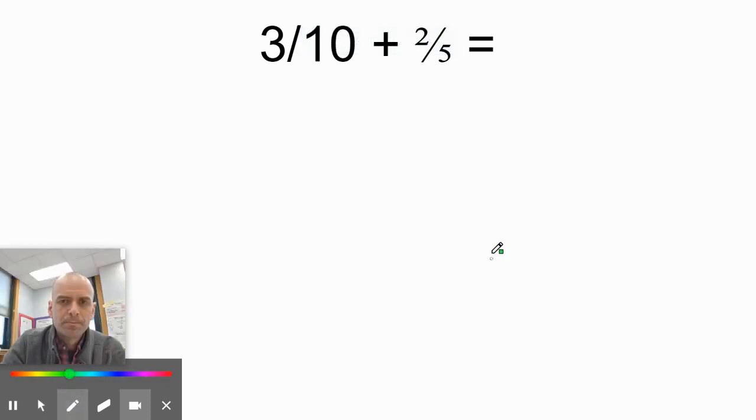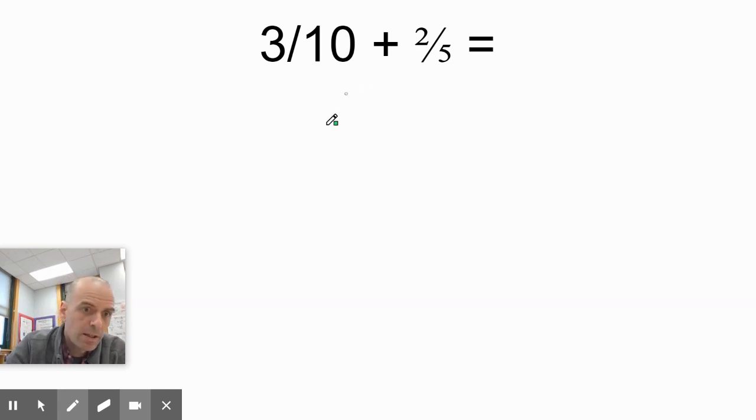Here's a case where I could multiply three tenths by five and get fiftieths, and two fifths by ten and get fiftieths. Those are pretty large numbers. But what I noticed though is that I can make five into tenths. So if I can do that, I don't need to change tenths. I can do less work. So watch this.